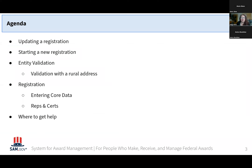By the end of the presentation, you should know how to get started the right way — which is a little bit different if you're updating an existing registration or starting a brand new registration. You're going to learn about entity validation and we'll address validation challenges with rural addresses, as that's been a challenge for many tribal entities. We'll also share important things to know when completing the registration pages, entering key information accurately in the core data section and the reps and certs, which will help ensure you get full and fair access to the federal market. We'll also show you where to get help if you get stuck on any of the steps.